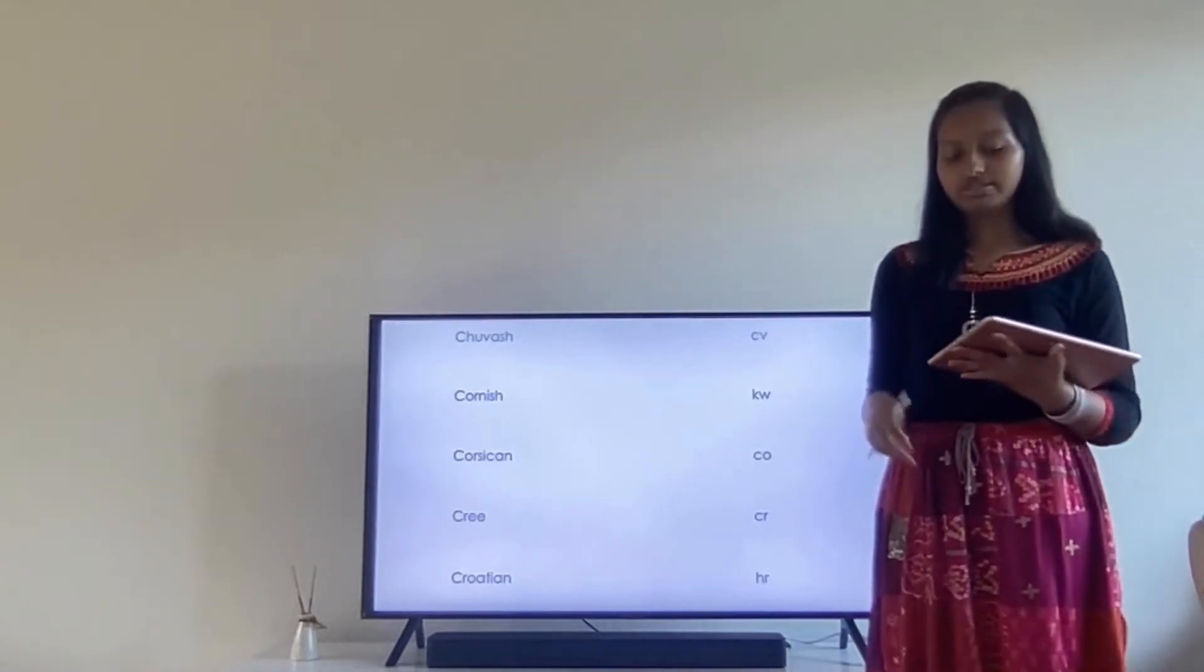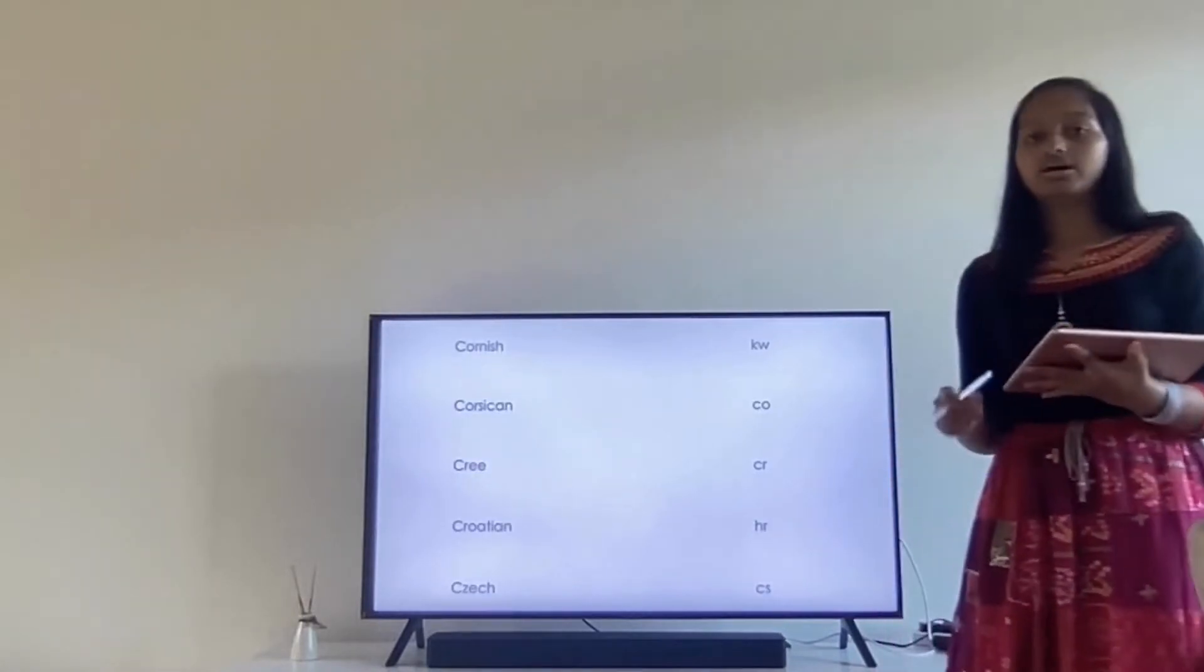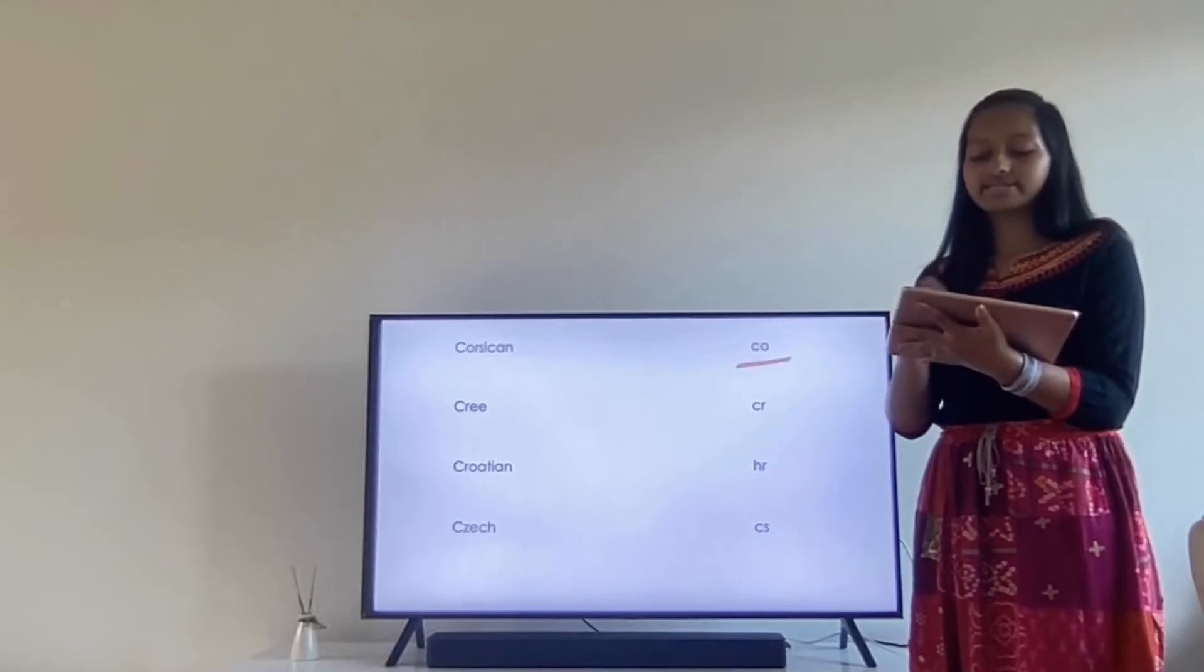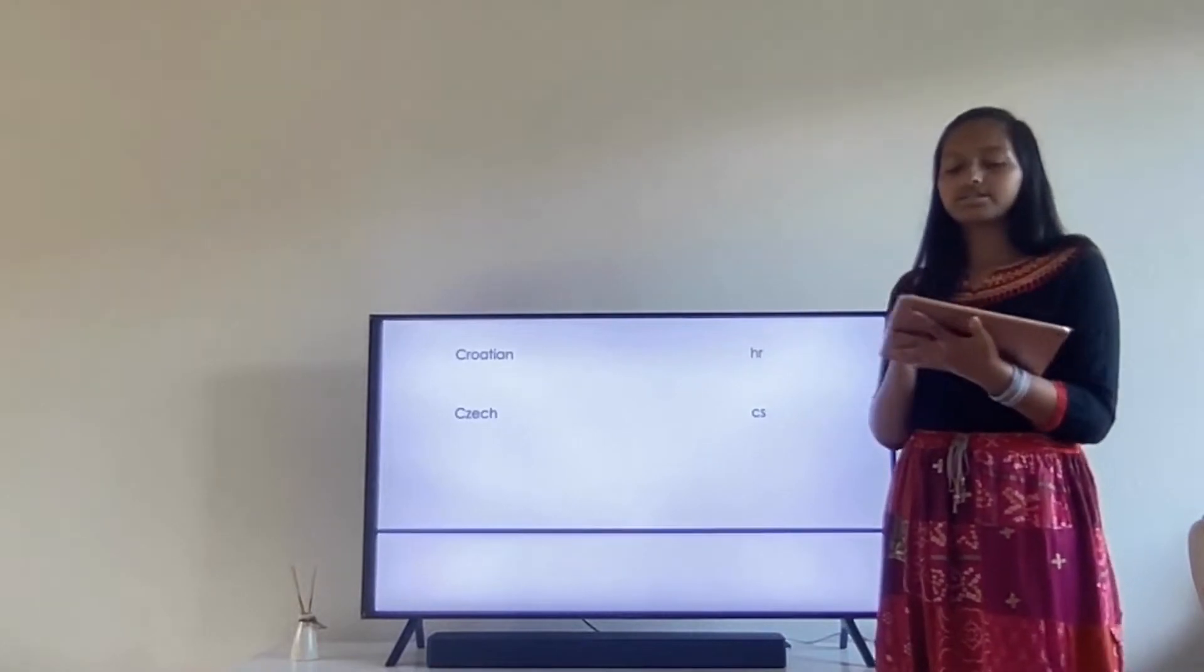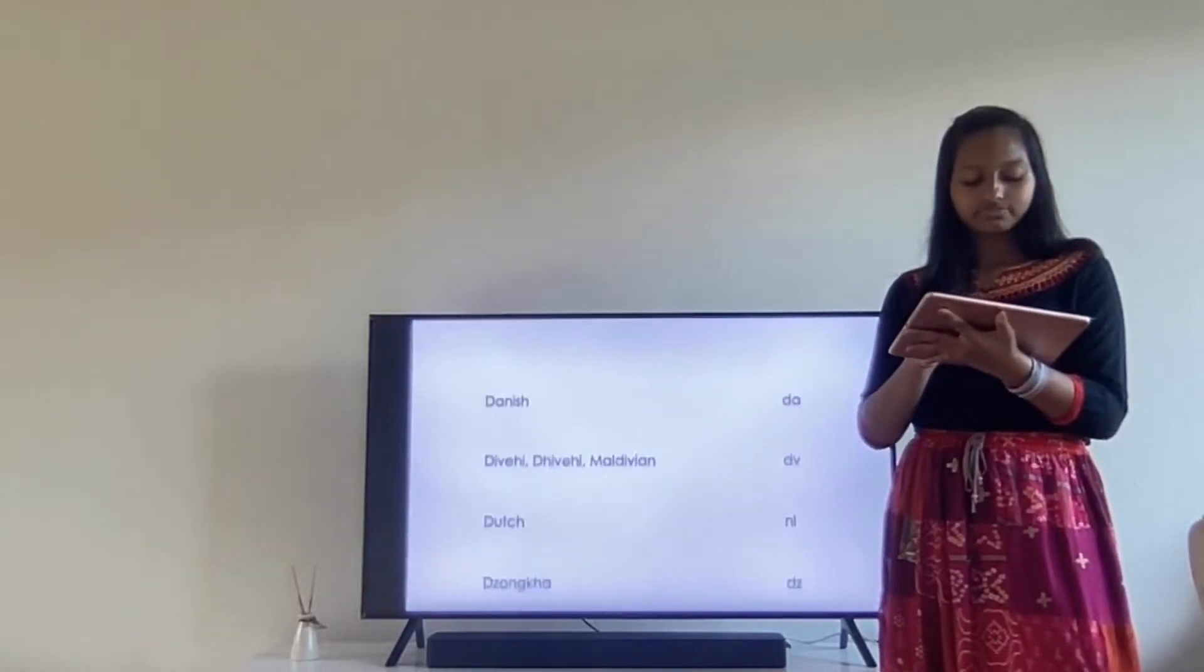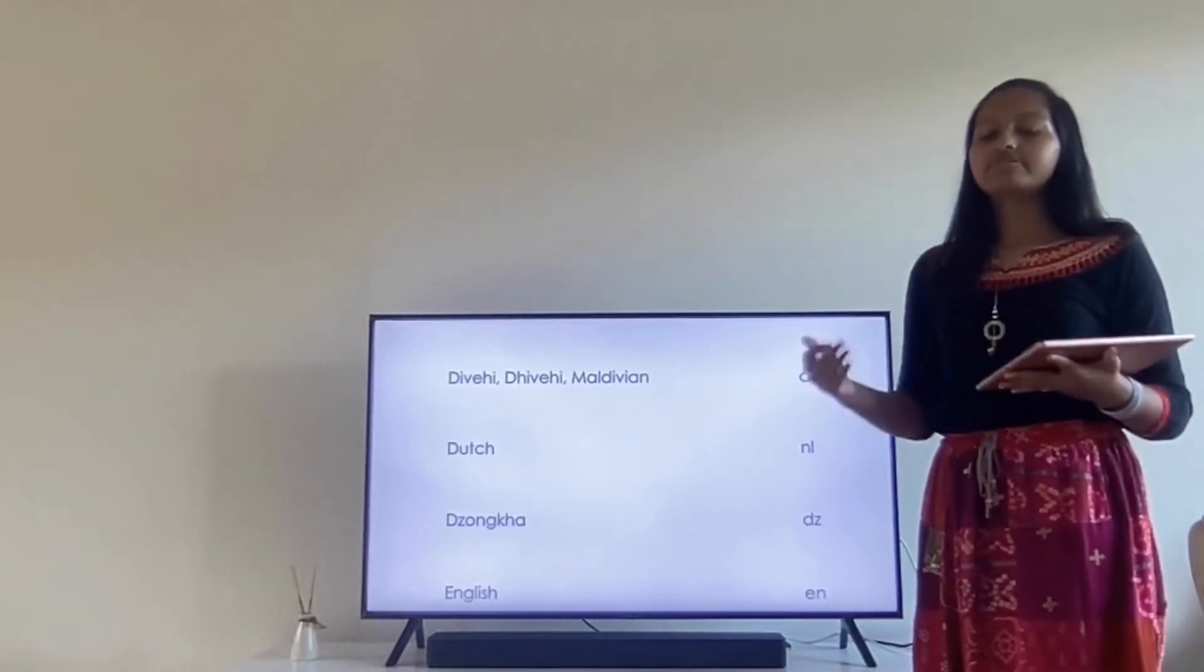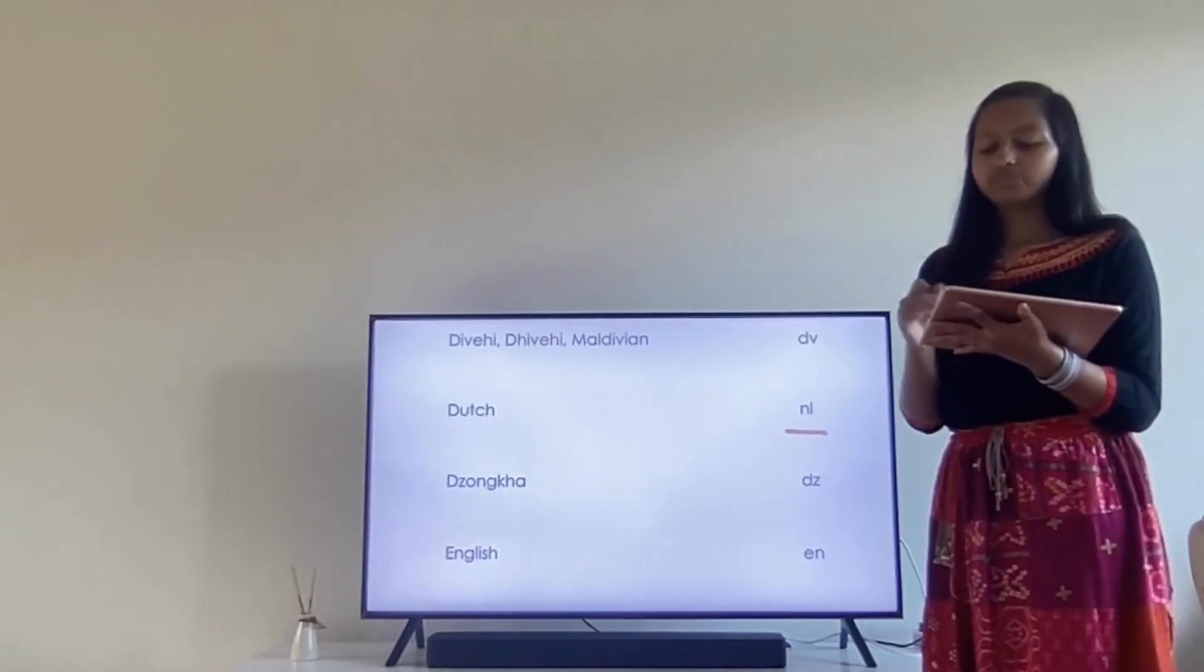The next language is Cornish. Cornish's language code is KW. Then we have Corsican, so Corsican's language code is CO. Cree's language code is CR. Croatian's language code is HR. Then we have Czech, Czech's language code is CS. Danish's language code is DA. Divehi, Dhivehi, Maldivian's language code is DV. Then we have Dutch, Dutch's language code is NL.